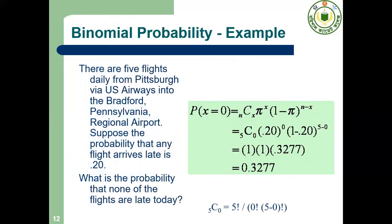Here is an example. There are 5 flights and the probability that any flight arrives late is 0.20. Here X = 0 means the number of flights that are late. Putting the values of n, p, and x, we get the probability equal to 0.3277.